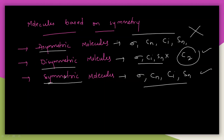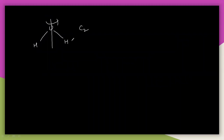First, let us understand symmetric molecules. A simple example is the water molecule. Water is having C2 axis symmetry, and you can also place a plane of symmetry (sigma). So this is a symmetric molecule.